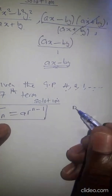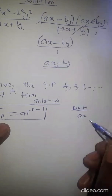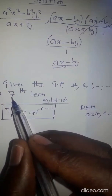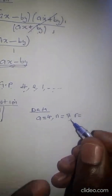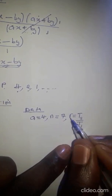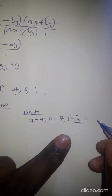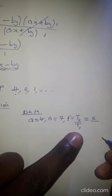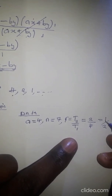From the information given, A — the first term — is equal to 4, and N is equal to 7. The common ratio R can be found by dividing the second term by the first term: R = 2 ÷ 4, which simplifies to 1/2. So our R is 1/2.